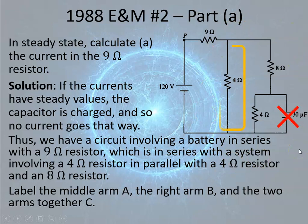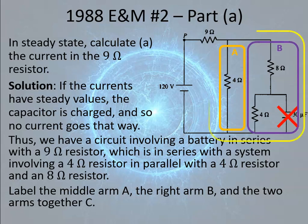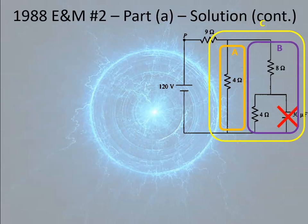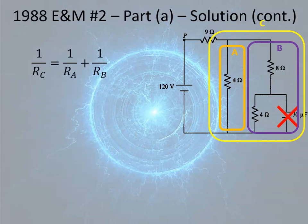Going on with this problem, we're going to label the middle arm A, the arm with the 4 ohm resistor A, the right arm B, and the two arms together C. So there's arm A, arm B, and arm C. C is the parallel combination of A and B. We'd like to figure out the equivalent resistance of C, because we can just add that to the 9 ohms to get the equivalent resistance of our circuit.